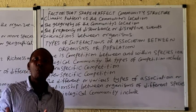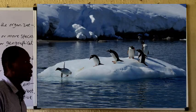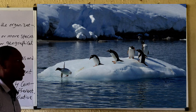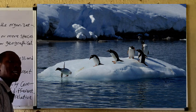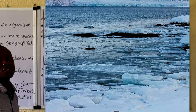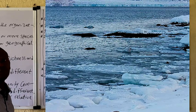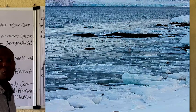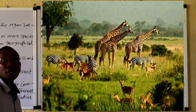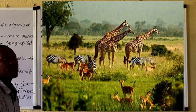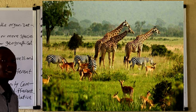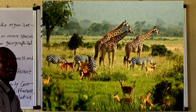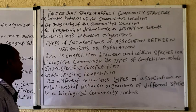Looking at the polar or cold region shown on the board, you realize that the number of species able to adapt to this environment is low because of the climatic factor. However, in the equatorial region where there is enough heat, sunlight, and resources to sustain plants and animals, we have high species diversity.